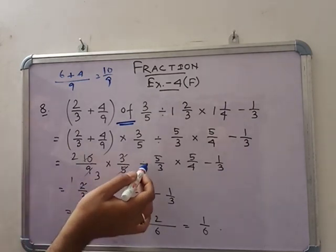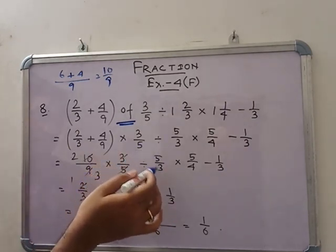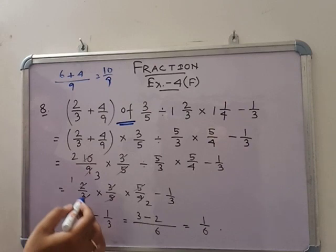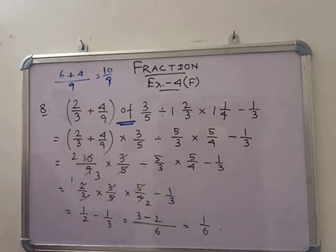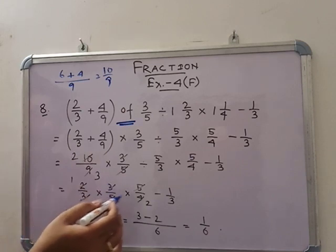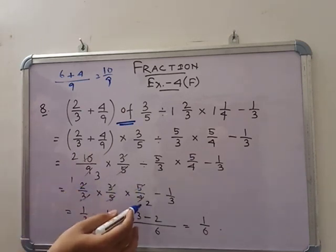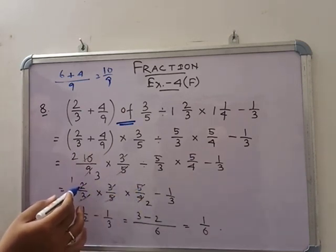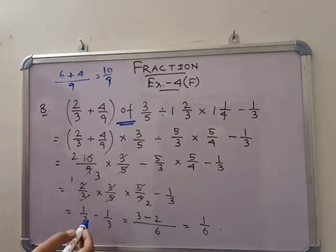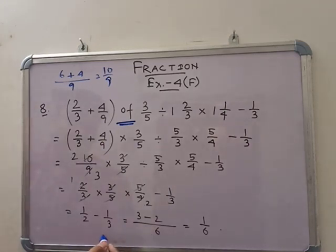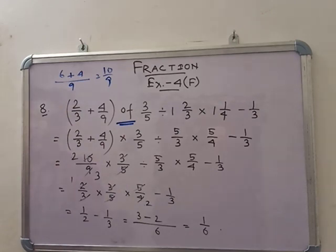Now division to multiplication — reciprocal. So: 2 by 3 into 3 by 5 into 5 by 4 minus 1 by 3. Cancellation: 3 and 3, 5 and 5, and 2 divided by 2 is 1, 4 divided by 2 is 2. So 1 by 2. That means 1 by 2 minus 1 by 3. LCM is 6: 3 minus 2, that is 1 by 6. So 1 by 6 is the answer.